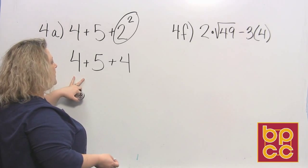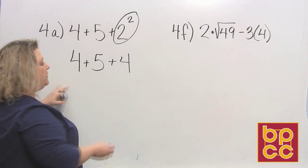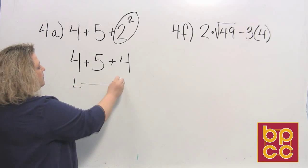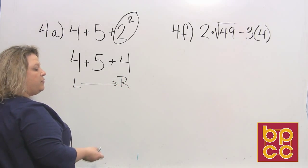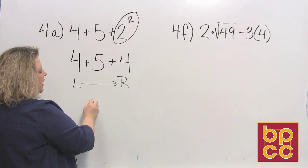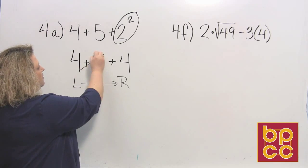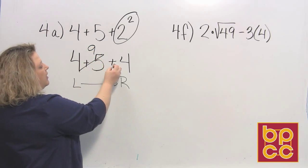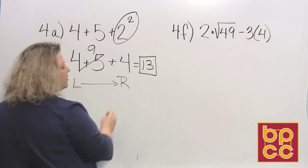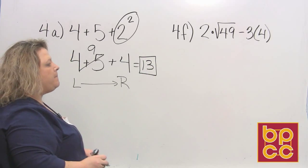So our next thing is adding and subtracting from left to right. When I look at this, all I see is addition, which is nice. I just add: 4 + 5 is 9, and 9 + 4 makes 13. So the final answer to this question is 13.